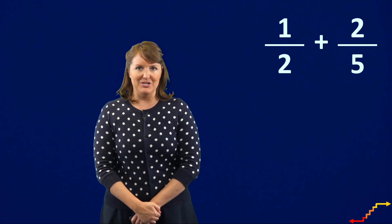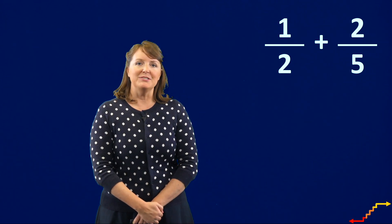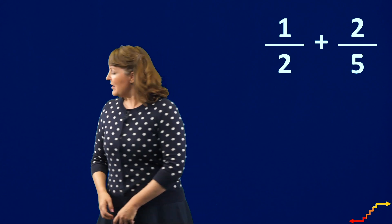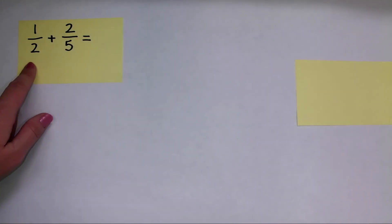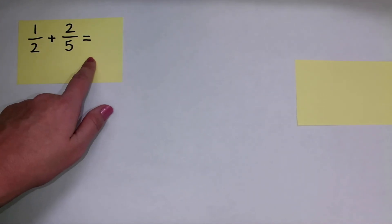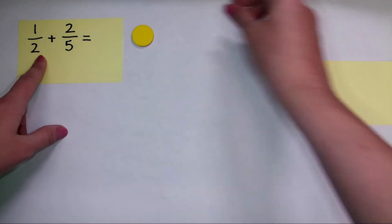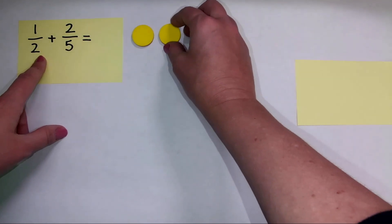So we're going to use the set model today to add these numbers together: one half plus two fifths. So here's the problem on our background. Now I'm going to show you what this looks like with manipulatives. So we are adding the problem, adding together one half plus two fifths. So I have my problem written out here so that students can easily see what we're trying to represent. And I'm going to use the set model to set this up.